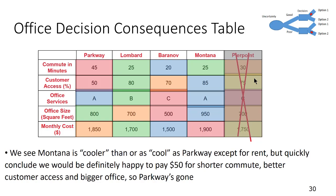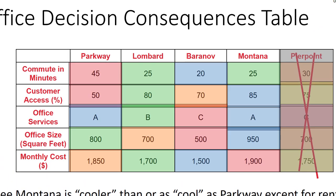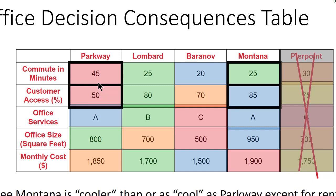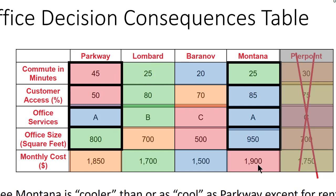Now let's look at Montana and compare that to Parkway. Montana has a shorter commute, better customer access, and better office size. The office services are about the same. The problem is that Montana costs $50 more a month. So we have a dialogue and might say: for a 20-minute shorter commute — 25 minutes versus 45 — I'd easily pay $50 more a month for the Montana property. Therefore, I can delete Parkway.